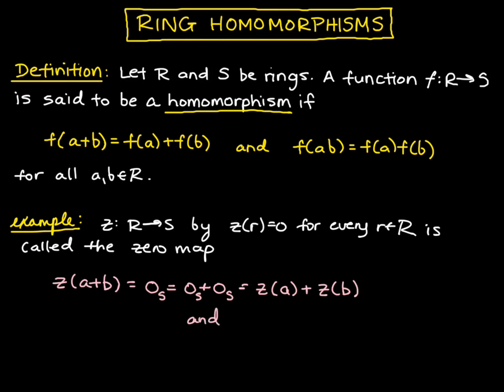And we have that Z of A times B is equal to zero element of S, and that's the same thing as zero times itself. But then each zero here corresponds to the image. One corresponds to the image of Z of A, and one corresponds to the image of B under Z. So what we have here is we've shown that the zero map is a ring homomorphism.